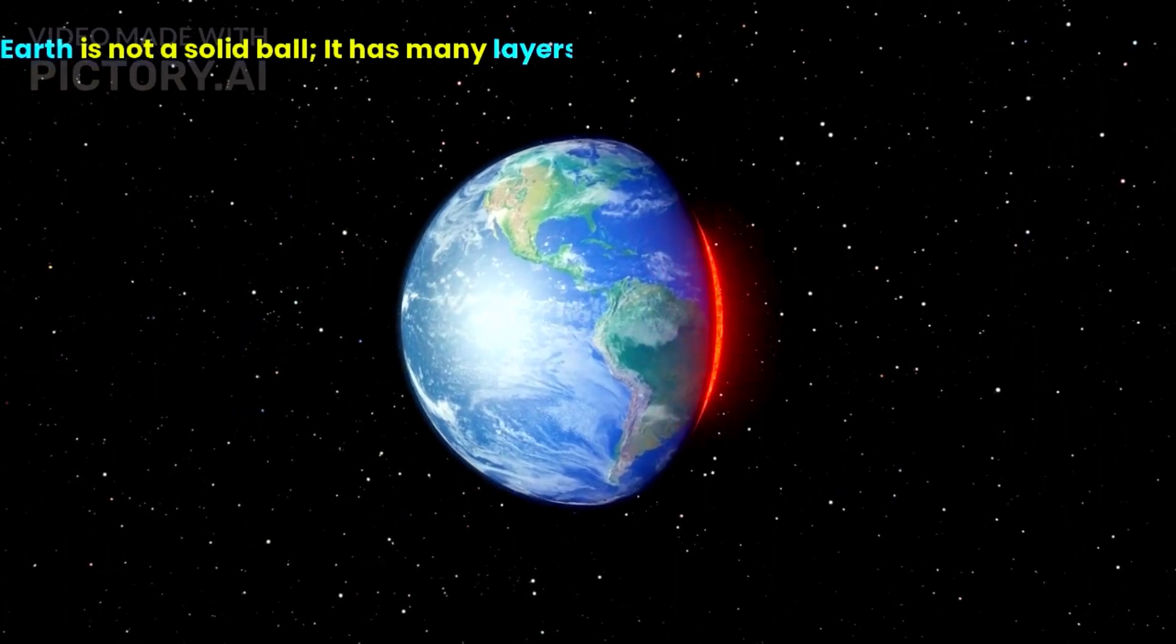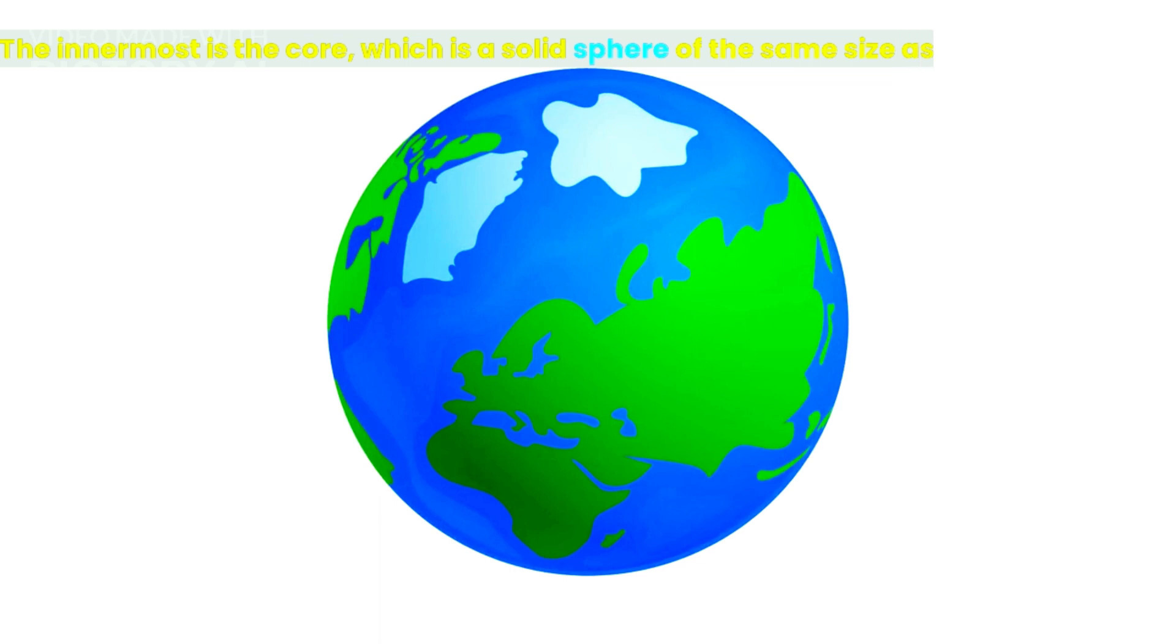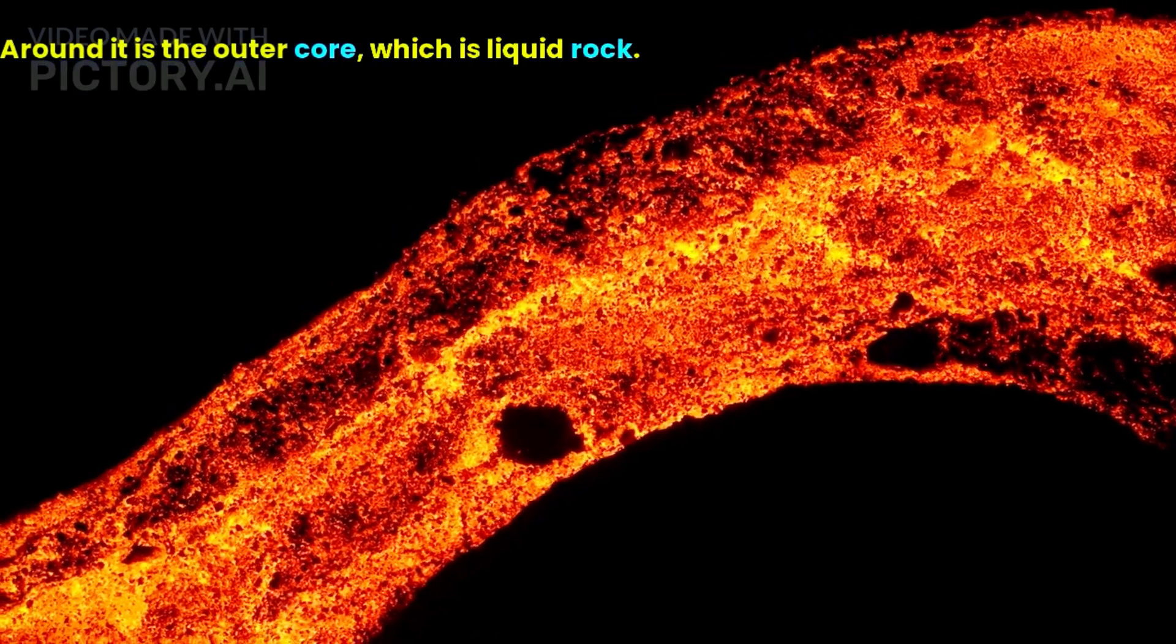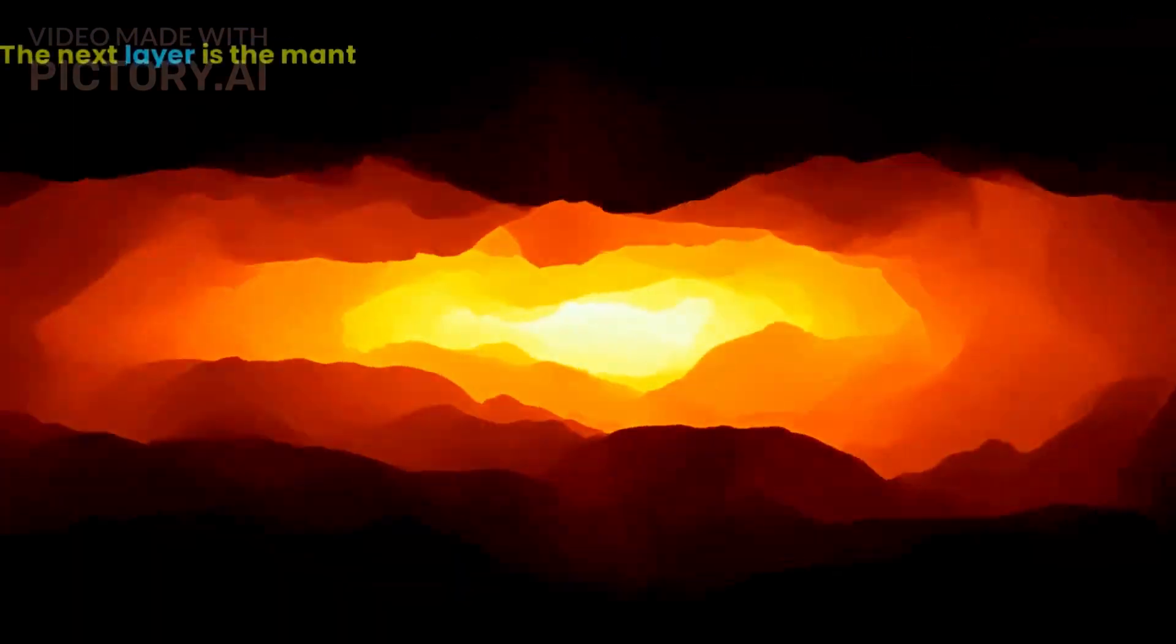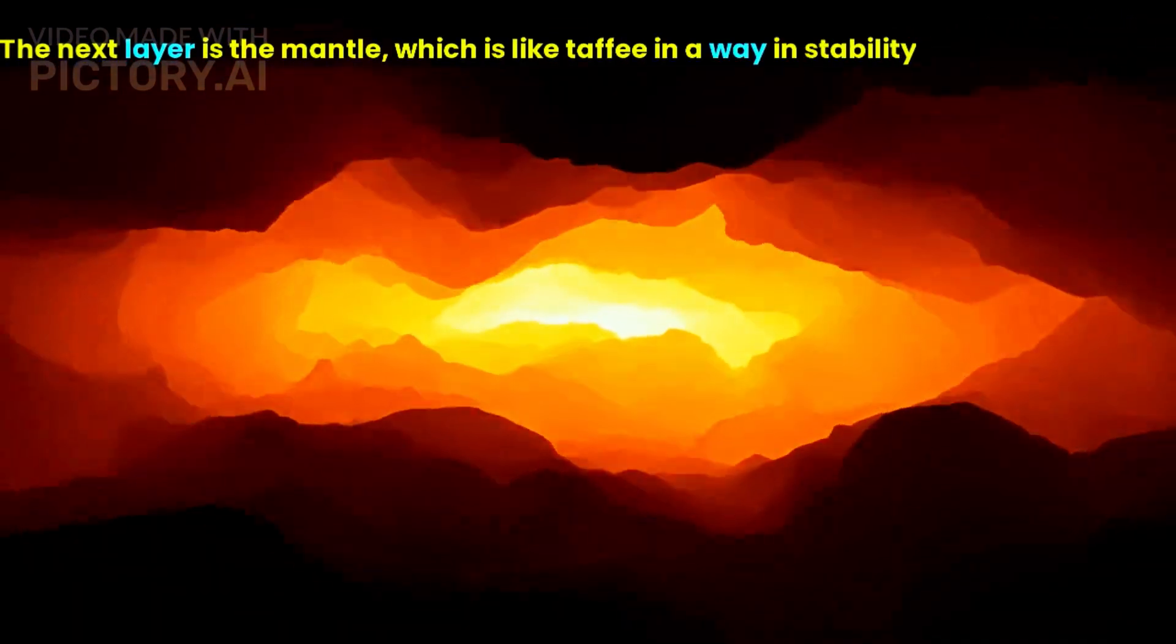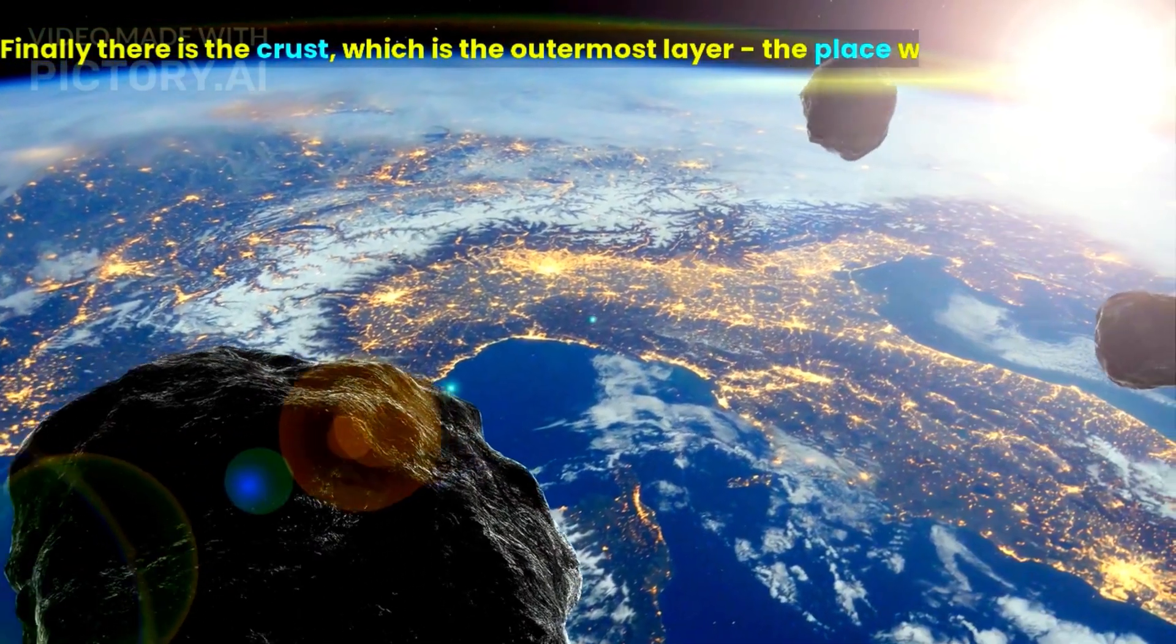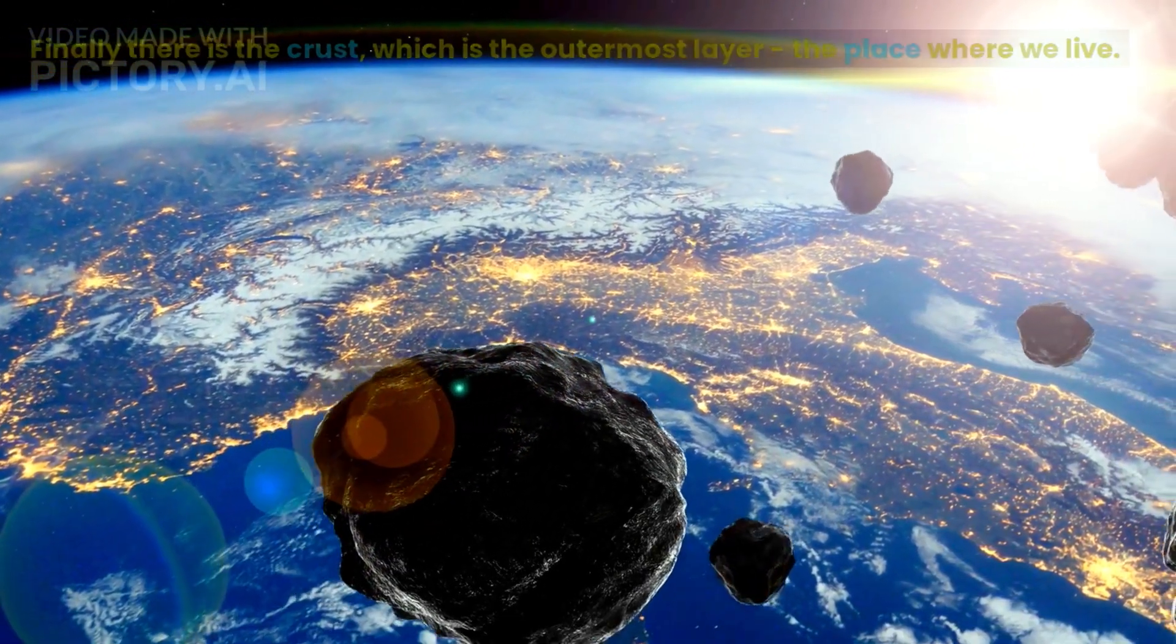Earth is not a solid ball, it has many layers. The innermost is the core, which is a solid sphere of the same size as Mars. Around it is the outer core, which is liquid rock. The next layer is the mantle, which is like taffy in a way in stability. Finally there is the crust, which is the outermost layer, the place where we live.